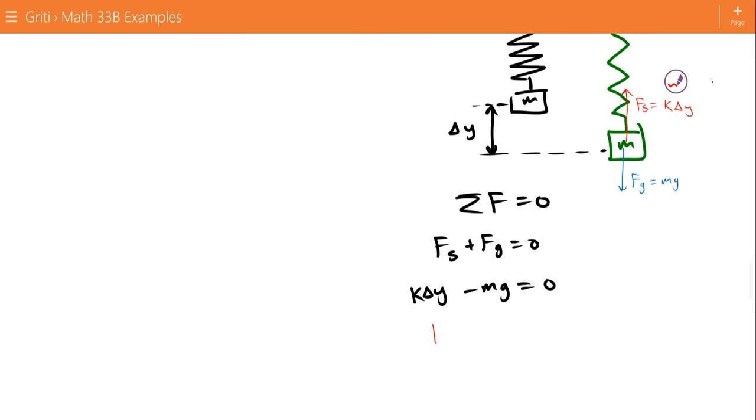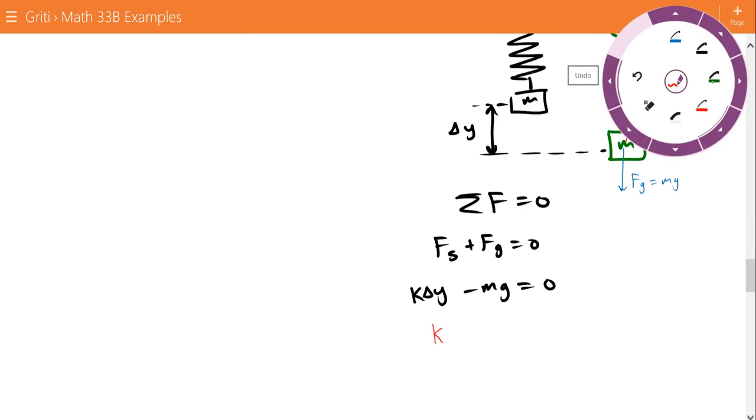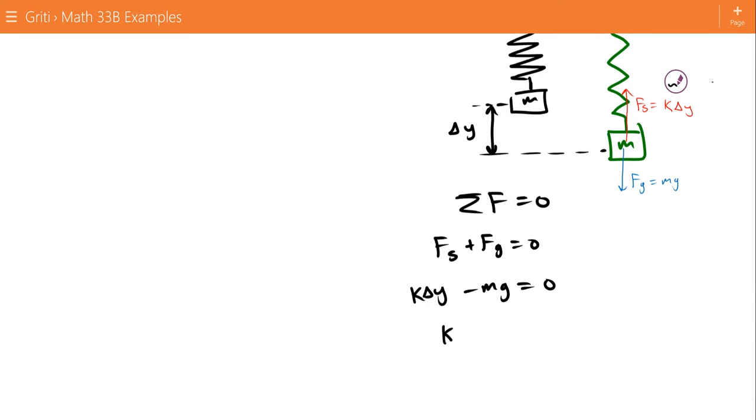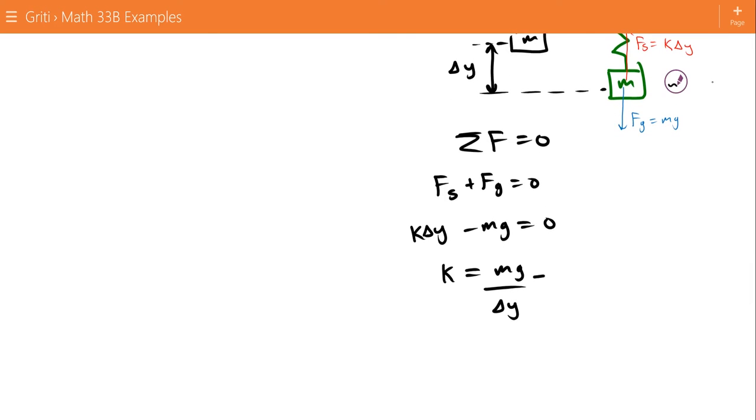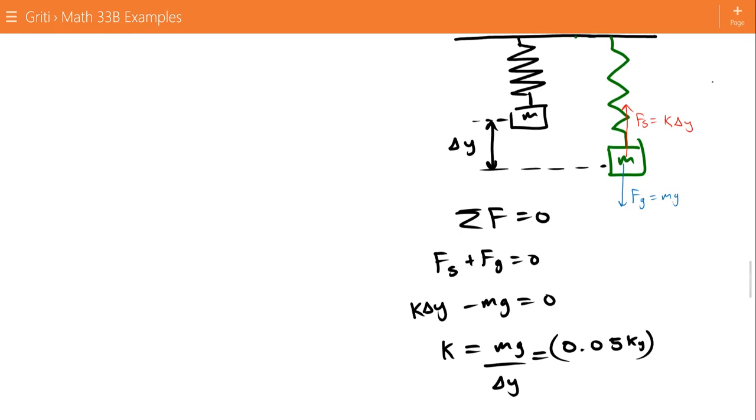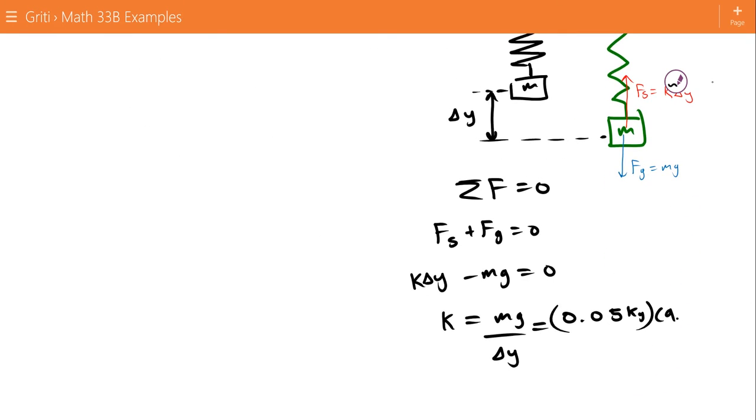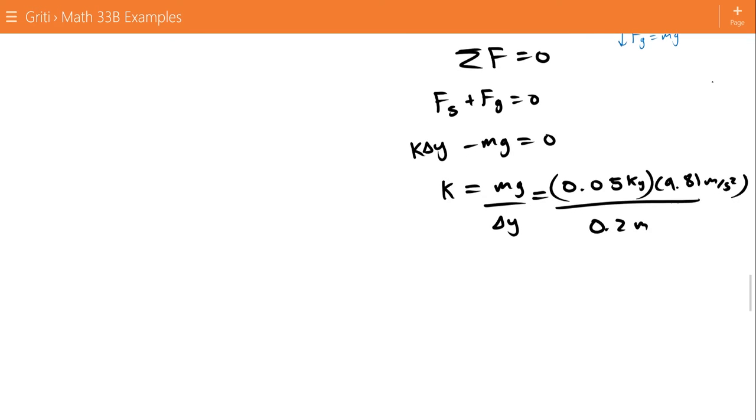So, if we solve this for k, we find that k equals mg divided by delta y. We know our mass is 0.05 kilograms, which is equal to 50 grams. And g is equal to 9.81 meters per second squared. And delta y is 0.2 meters. So that gives us a k of 2.45 newtons per meter.